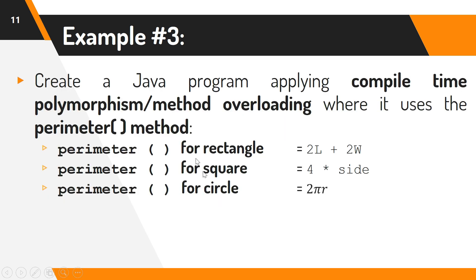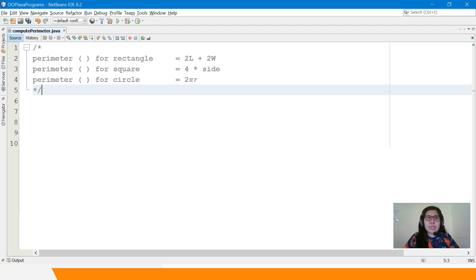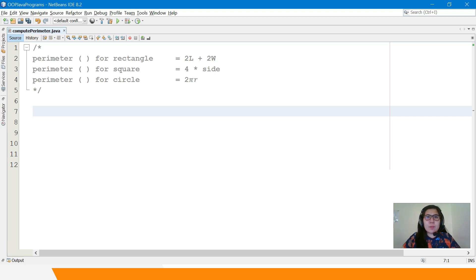Let's try to create a Java program applying compile-time polymorphism or method overloading, where it uses the perimeter method. We have three perimeter methods for rectangle, square, and circle. Let's create a class that will declare these three perimeter methods. We'll name it public class ComputePerimeter, as reflected also in the file name.